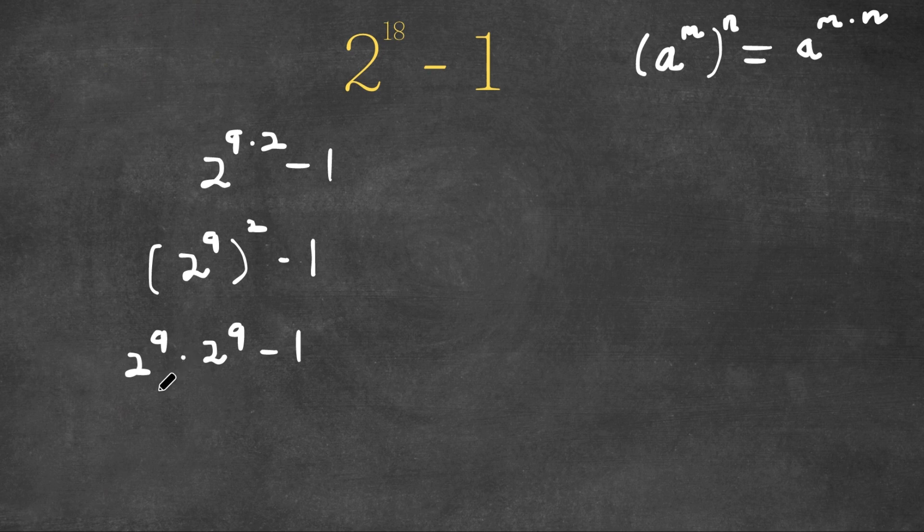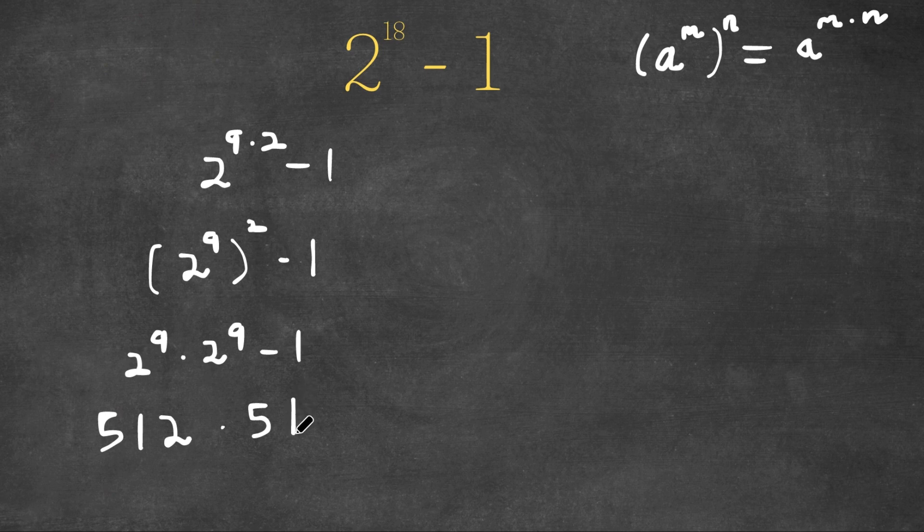Now, 2 to the power of 9 is equal to 512. You should know that because you should memorize your powers of 2. So now we have 512 times 512 minus 1.